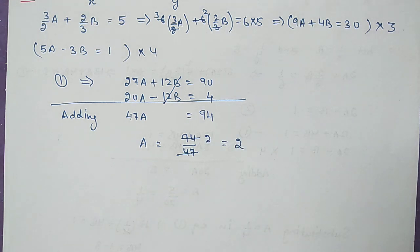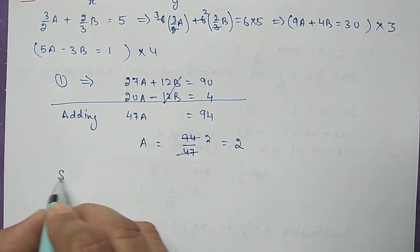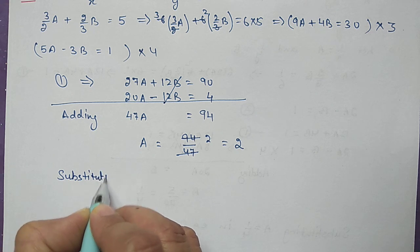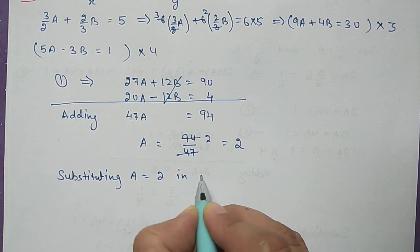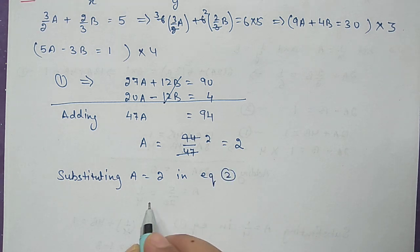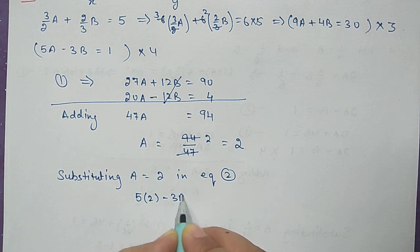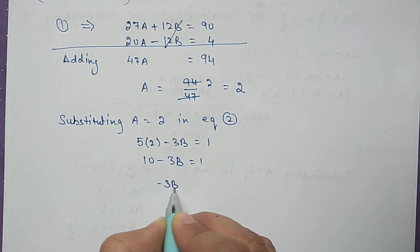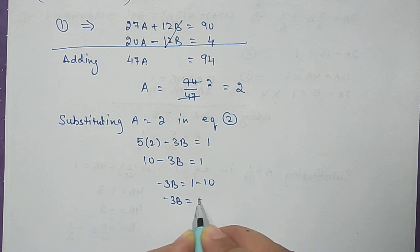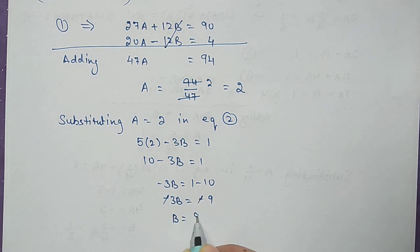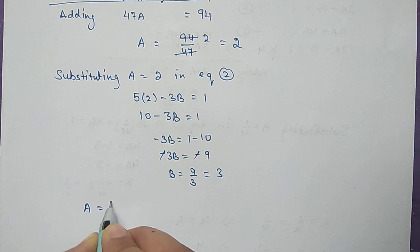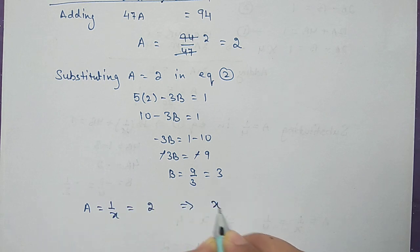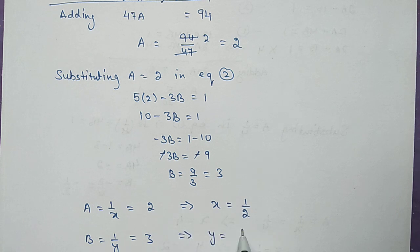Substituting a equal to 2 into equation 2: 5 times 2 minus 3b equal to 1, so 10 minus 3b equal to 1, giving minus 3b equal to 1 minus 10, so minus 3b equal to minus 9, and b equal to 3. Now we find x and y: a equals 1/x equals 2, so x equals 1/2, and b equals 1/y equals 3, so y equals 1/3.